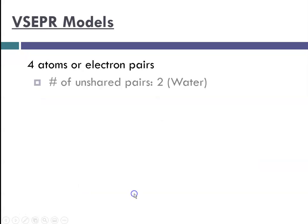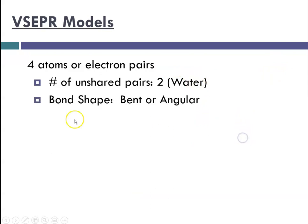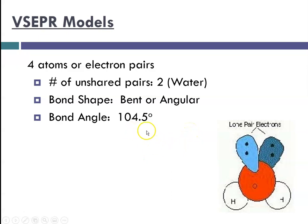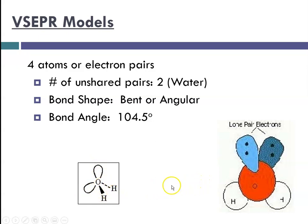With four atoms or electron pairs and two unshared pairs, the shape is still bent or angular. In the case of water, with hydrogen and oxygen, the two lone pairs of oxygen are able to exert quite a lot of repelling power against the hydrogens. So you end up with a bond angle of 104.5 degrees — not 109.5. Know that bond angle. The two lone pairs are shown in their own orbital, and the two hydrogens give this bond angle of 104.5.